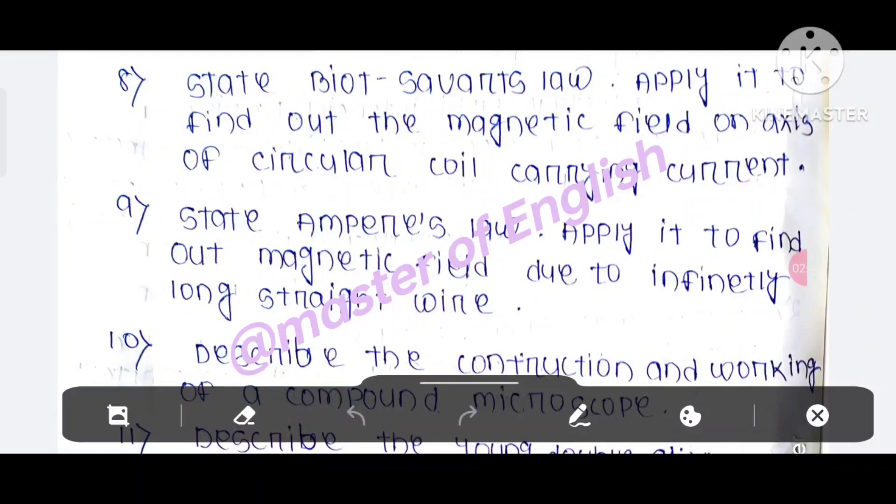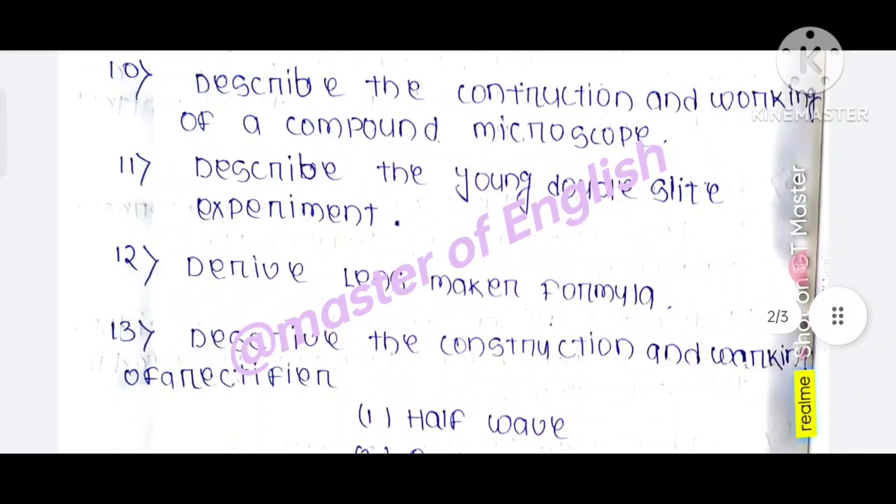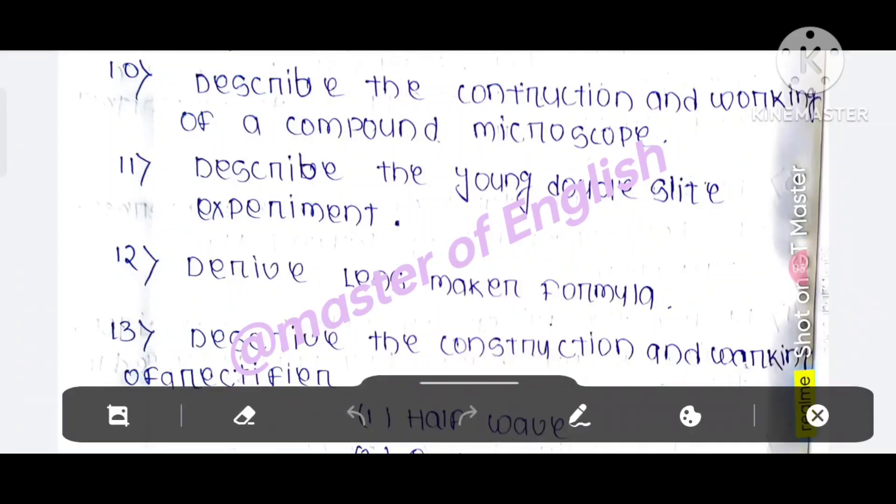Question number 8: state Biot-Savart's law, apply it to find out the magnetic field on axis of circular coil carrying current. Then the Young's double slit experiment. Derive lens maker formula.